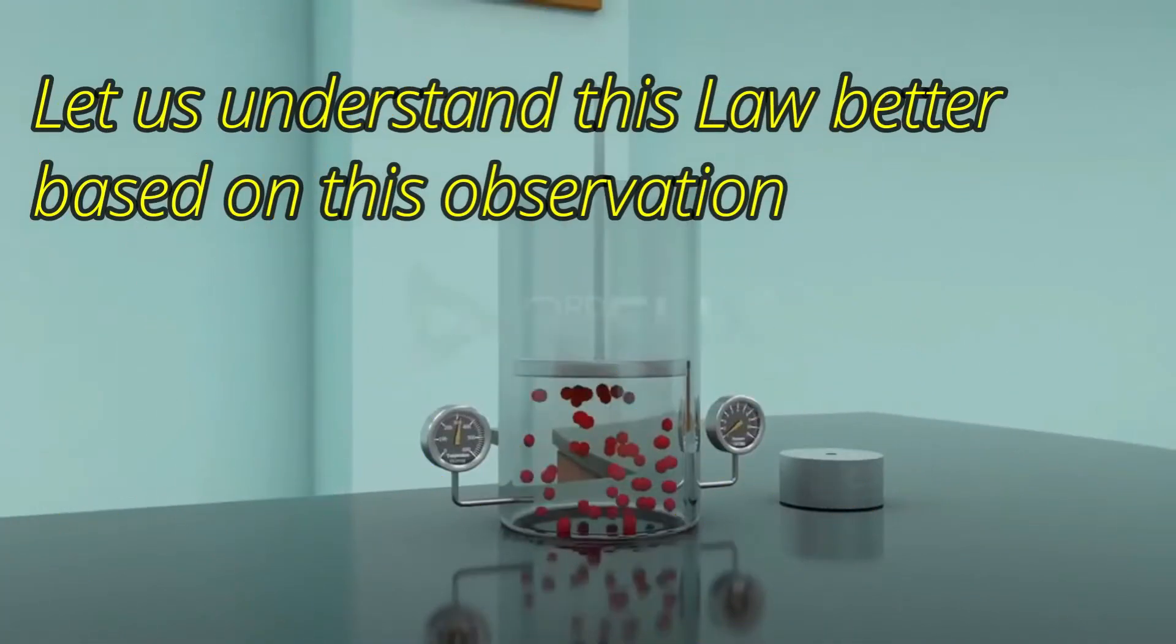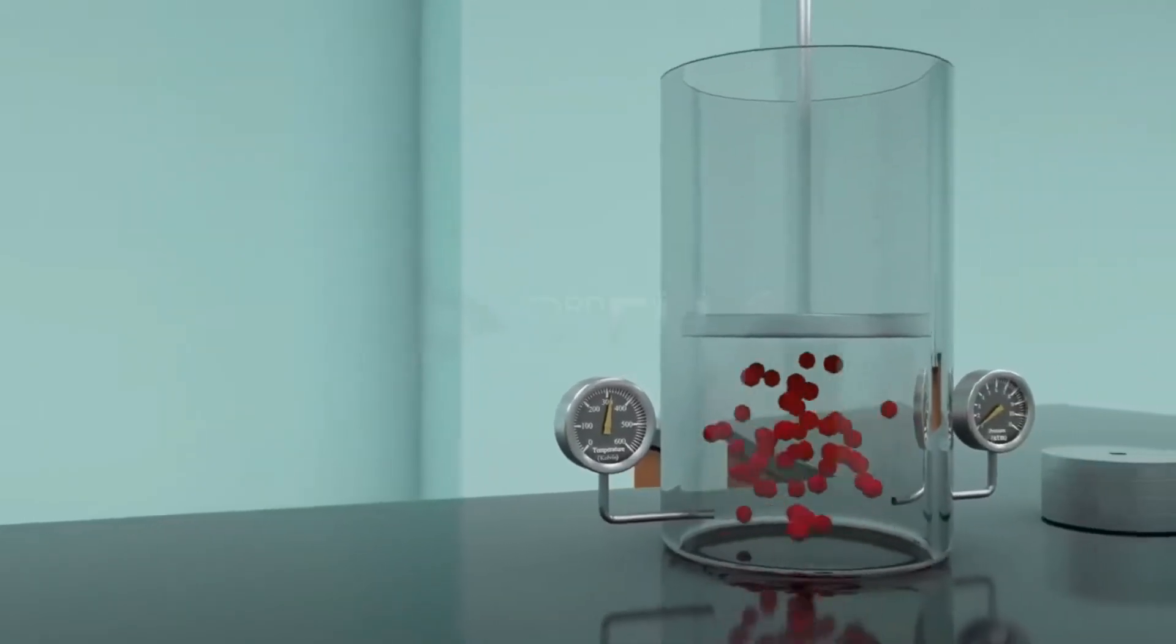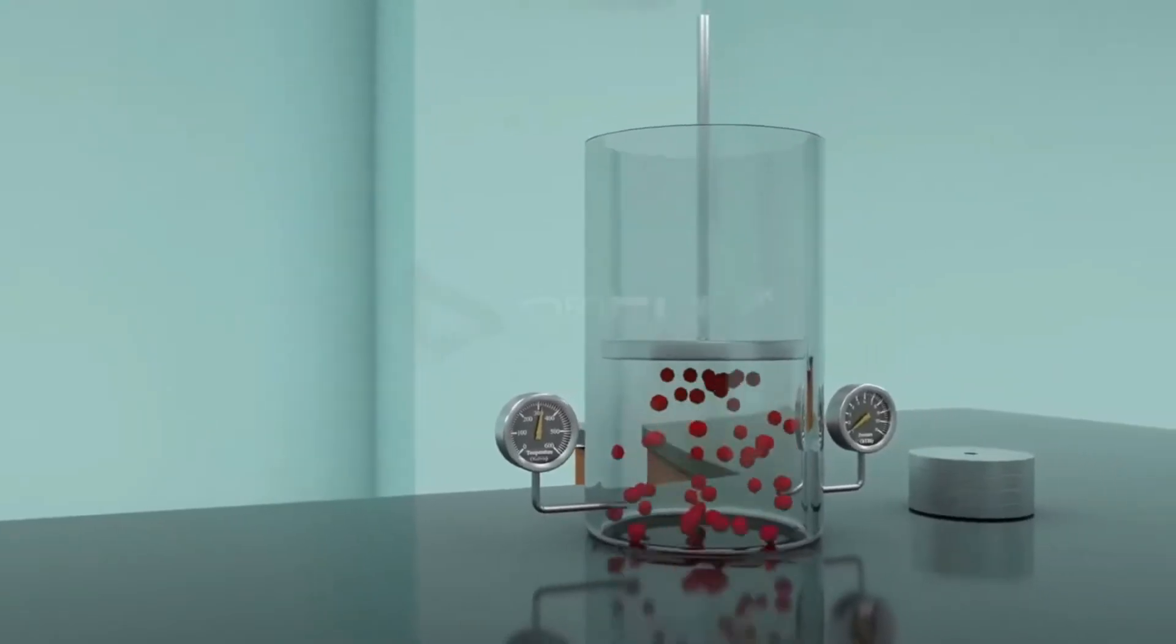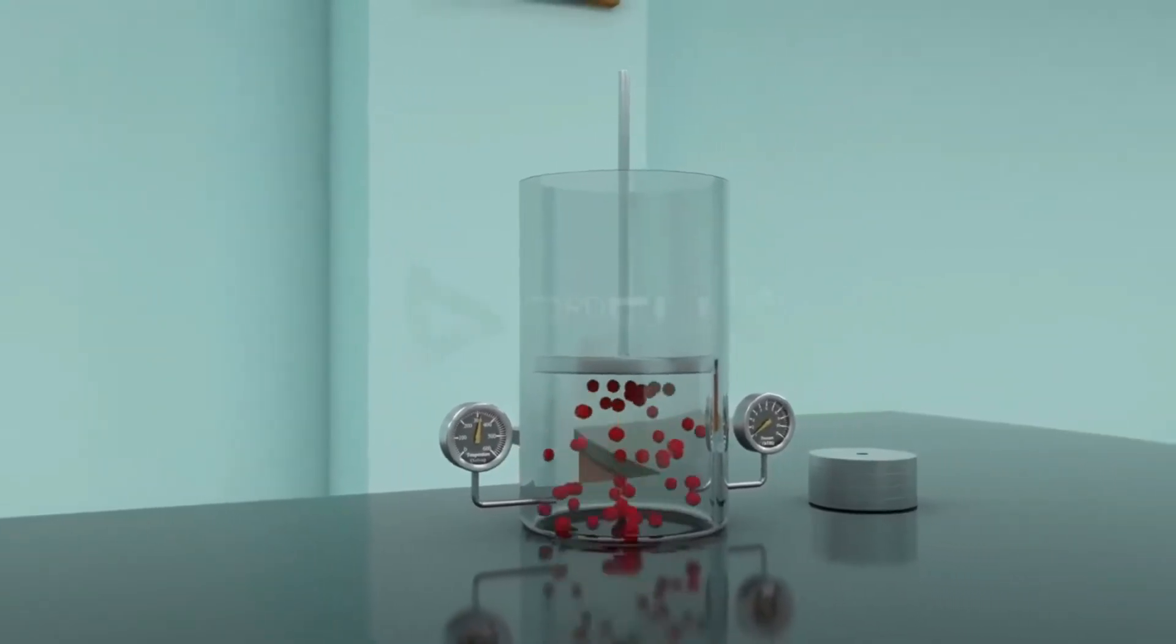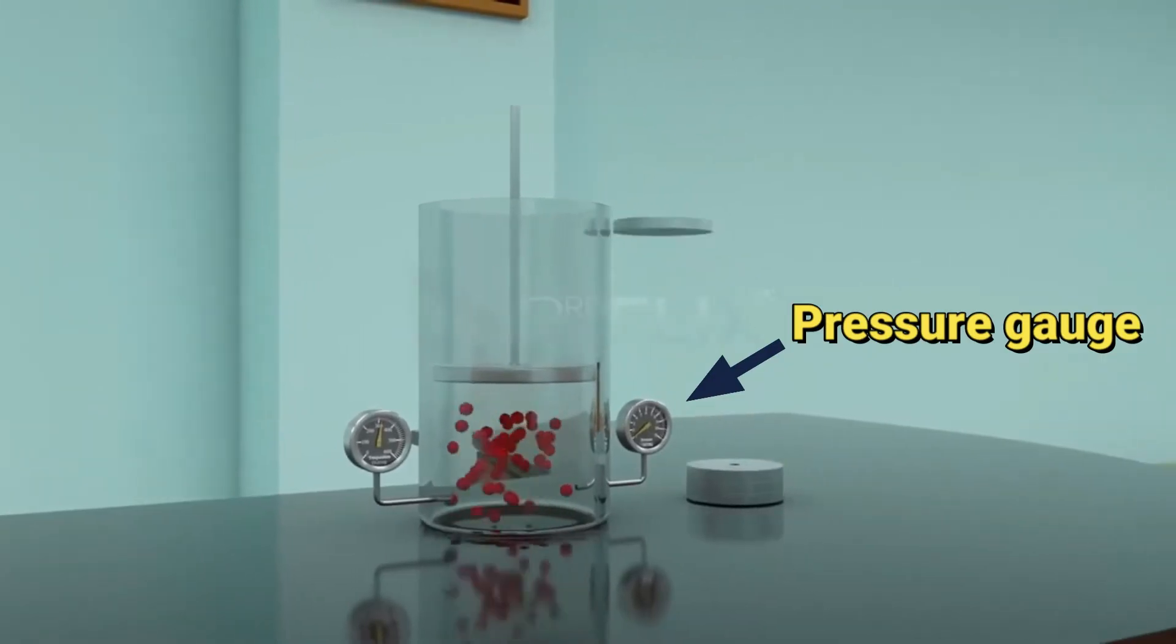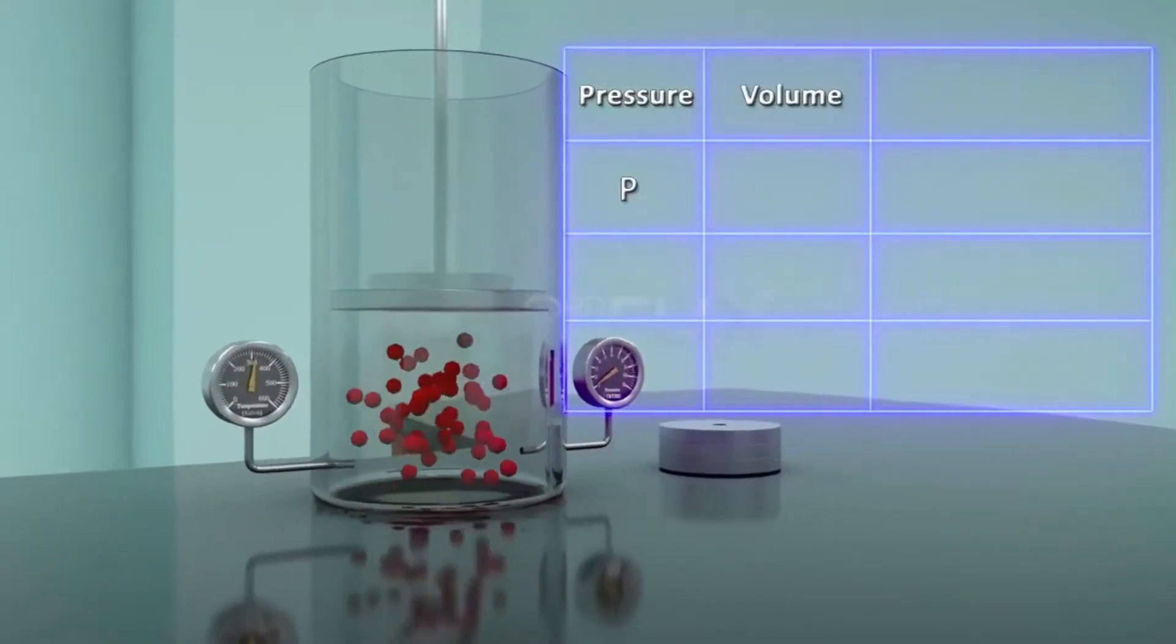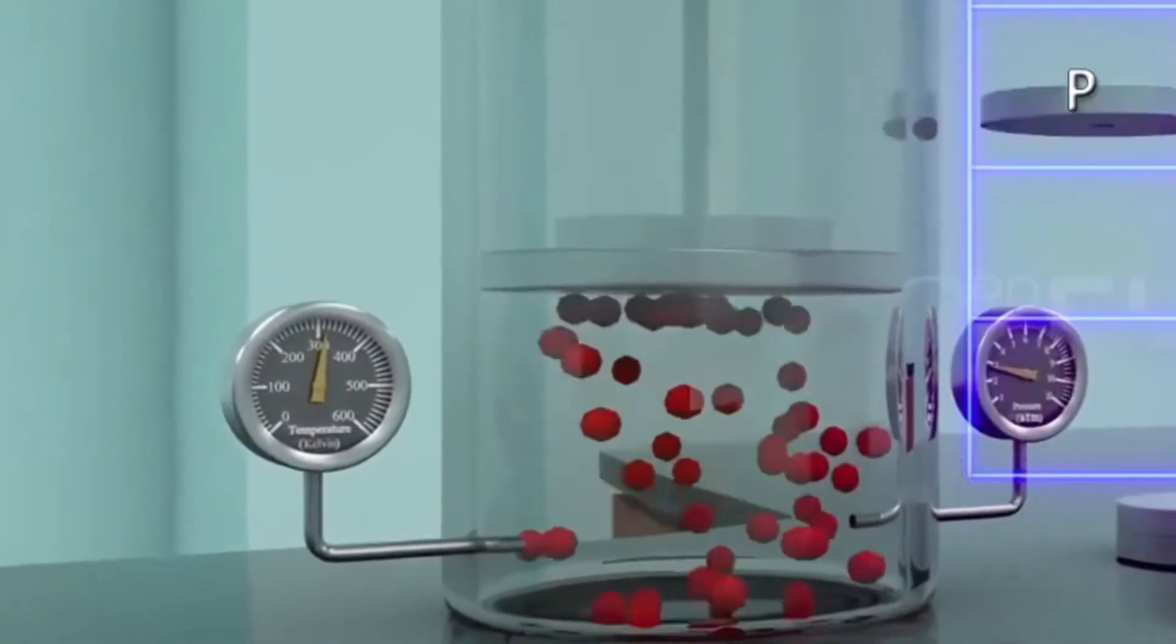Let us understand this law better based on this observation. Consider a cylinder with a movable piston enclosing a gas at constant temperature. The pressure of gas particles can be changed by adding weight on the piston. As you see here, if we increase the pressure by adding weights, the volume is decreased.